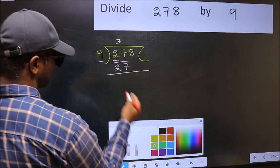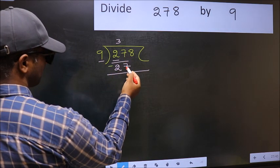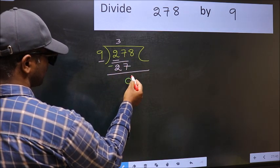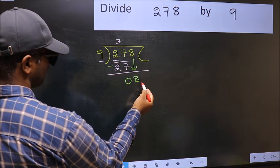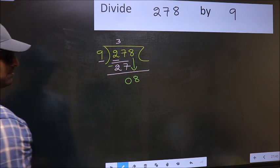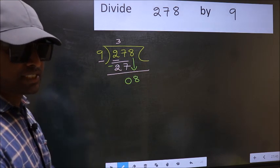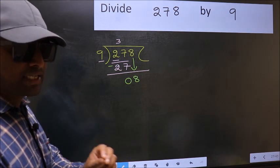Now you should subtract. 27 minus 27 is 0. After this, bring down the beside number, so 8 down. After this step, the mistake happens. And the mistake is this.